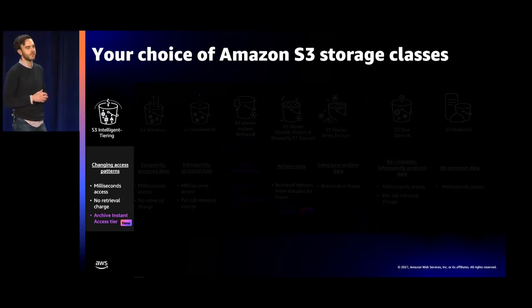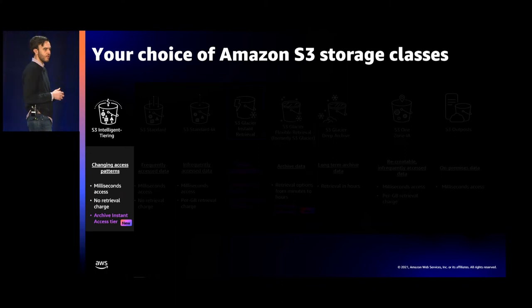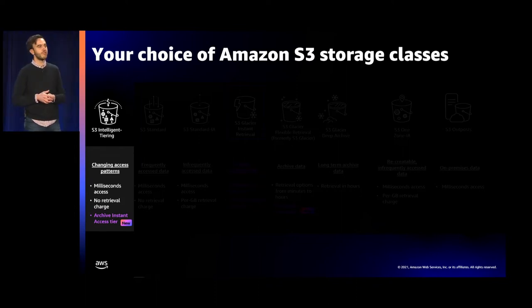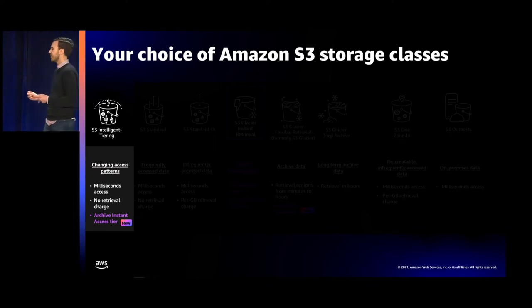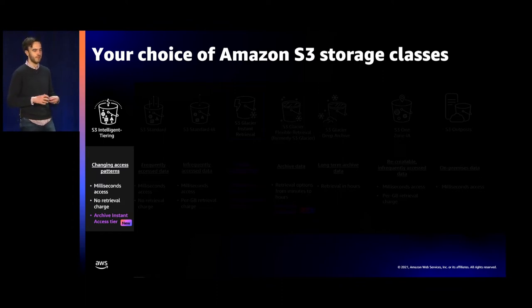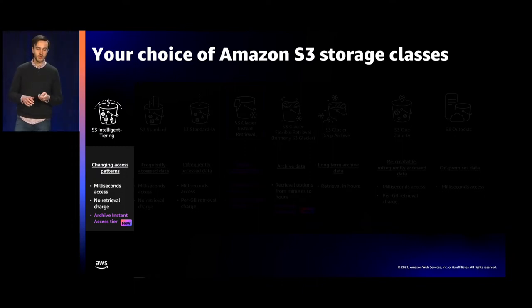S3 Intelligent Tiering is the first cloud storage class that delivers automatic storage cost savings by monitoring your data at the granular object level and moving objects that have not been accessed to lower-cost access tiers. Customers use it to store shared datasets accessed by different applications, teams, and individuals — whether for analytics, machine learning, real-time monitoring, or other data lake use cases. Intelligent Tiering is really becoming the standard or default storage class for many customers, particularly those running data lakes on Amazon S3. For data with known or predictable access patterns, you can choose from storage classes optimized for different access patterns.